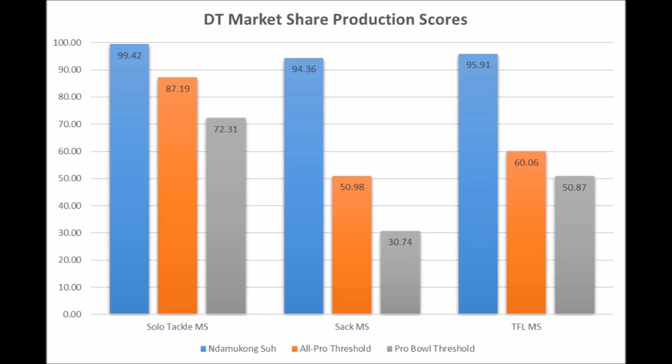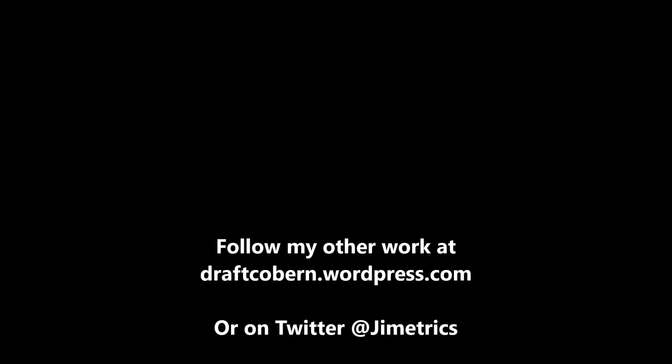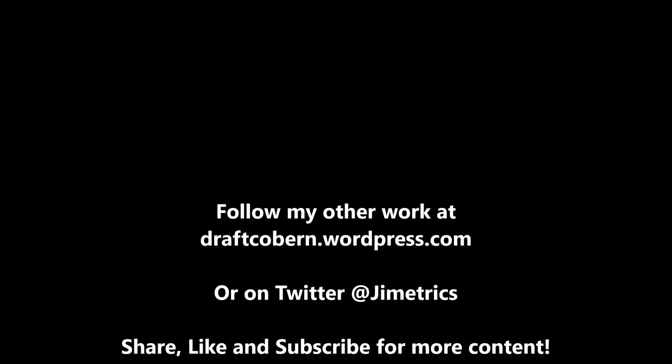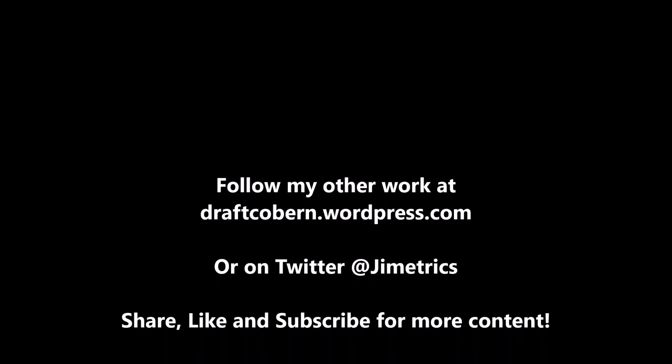In general, with Taven Bryan, very good overall production data — indicative of a potential Pro Bowl player — but not someone you should be considering the next Ndamukong Suh, the next J.J. Watt. Just a guy that could easily be a multiple Pro Bowl-type defensive tackle if he tests well as an athlete, but not someone you should be viewing as a generational prospect. My name is James Coburn. You can find my other work at draftcoburn.wordpress.com and follow me on Twitter at Jimmetrics. If you like this content, leave a like and subscribe, share the video, and hit the notification button.